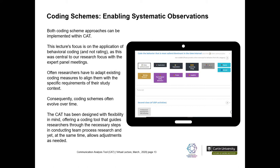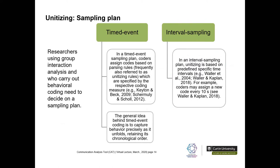The CAT has been designed with flexibility in mind, offering a coding tool that guides researchers through necessary steps in conducting team process research while allowing adjustments where needed. The second key requirement a researcher must consider is what sampling plan they're going to implement.